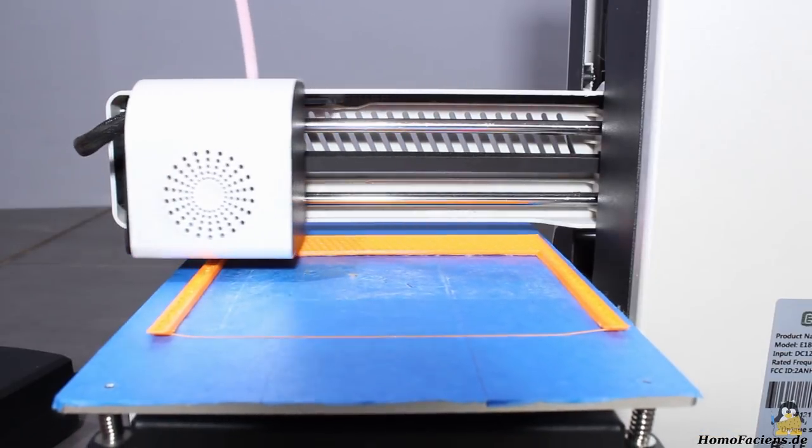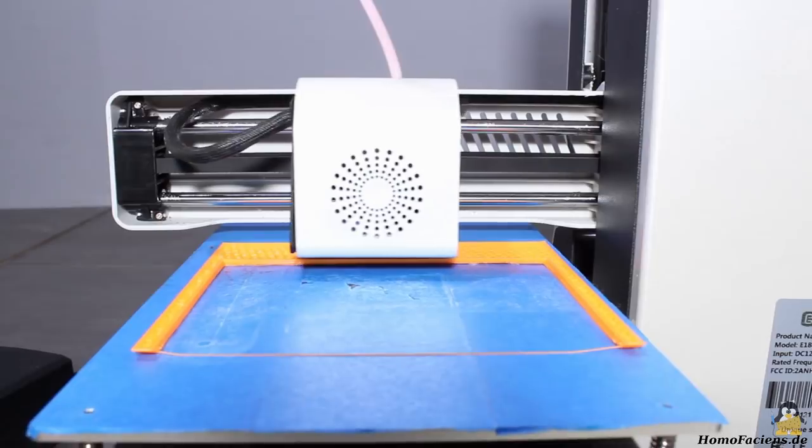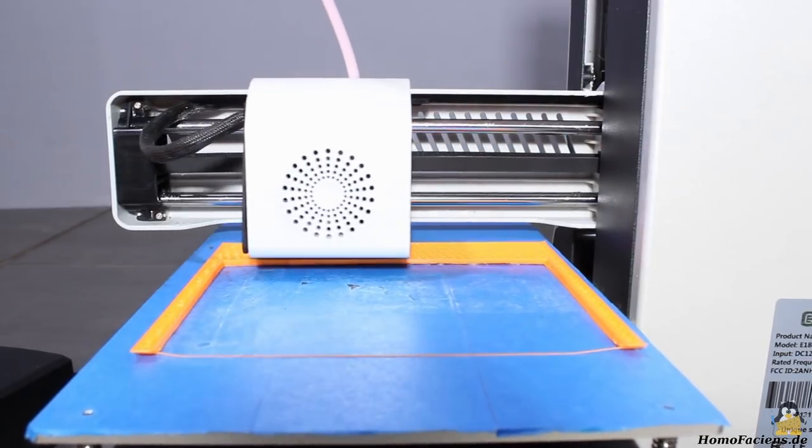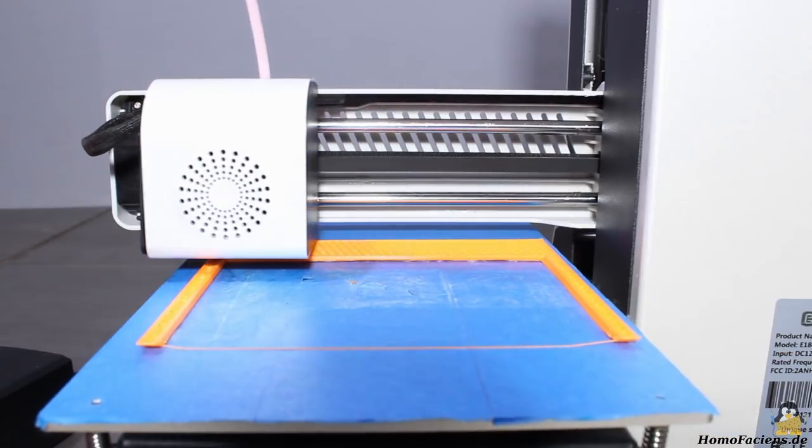Also not very difficult to design is a handle, that I am printing next with the E180. I am using orange colored filament to make clear that those add-ons are not part of the printer package.